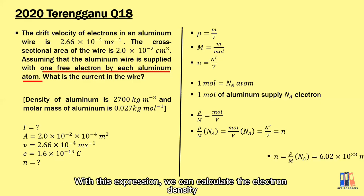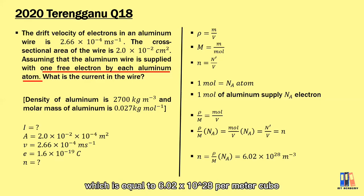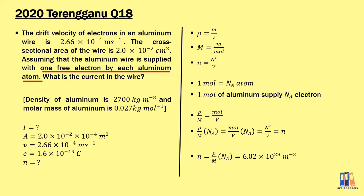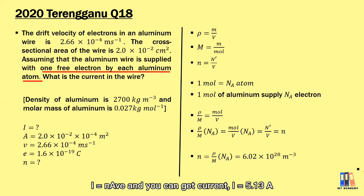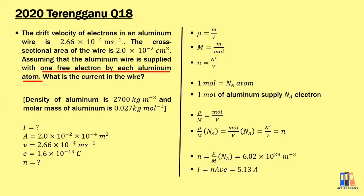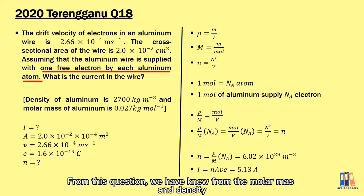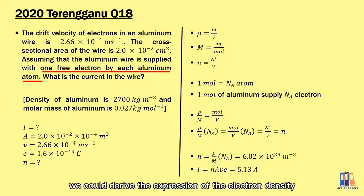Using this expression, we calculate the electron density, which equals 6.02 times 10 to the power of 28 per metre cubed. Substituting all values into I equal to nAvE, we get a current equal to 5.13 amperes. We have now shown how to derive the electron density from the molar mass and density of the material.